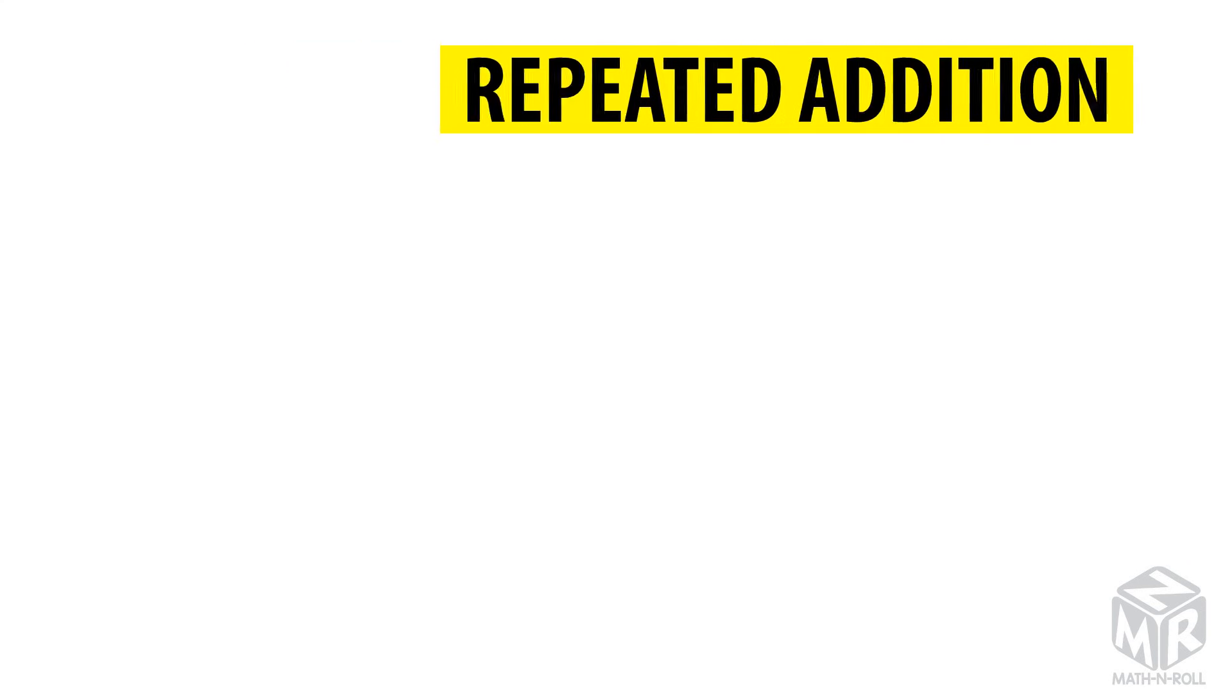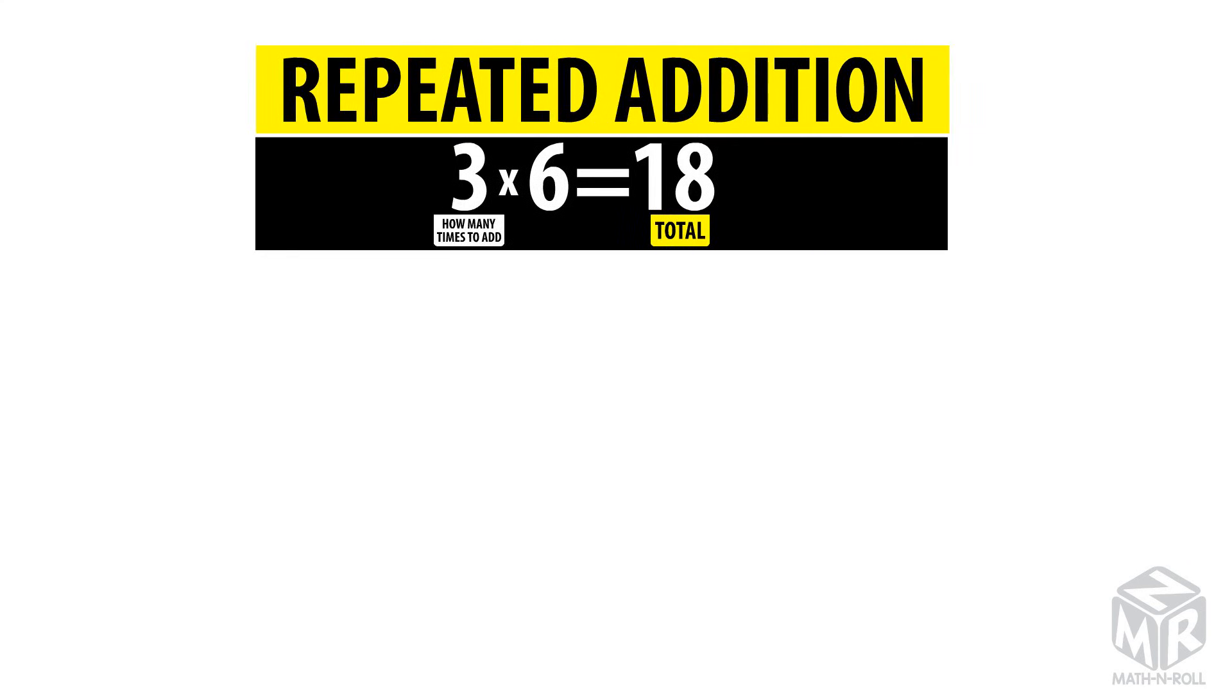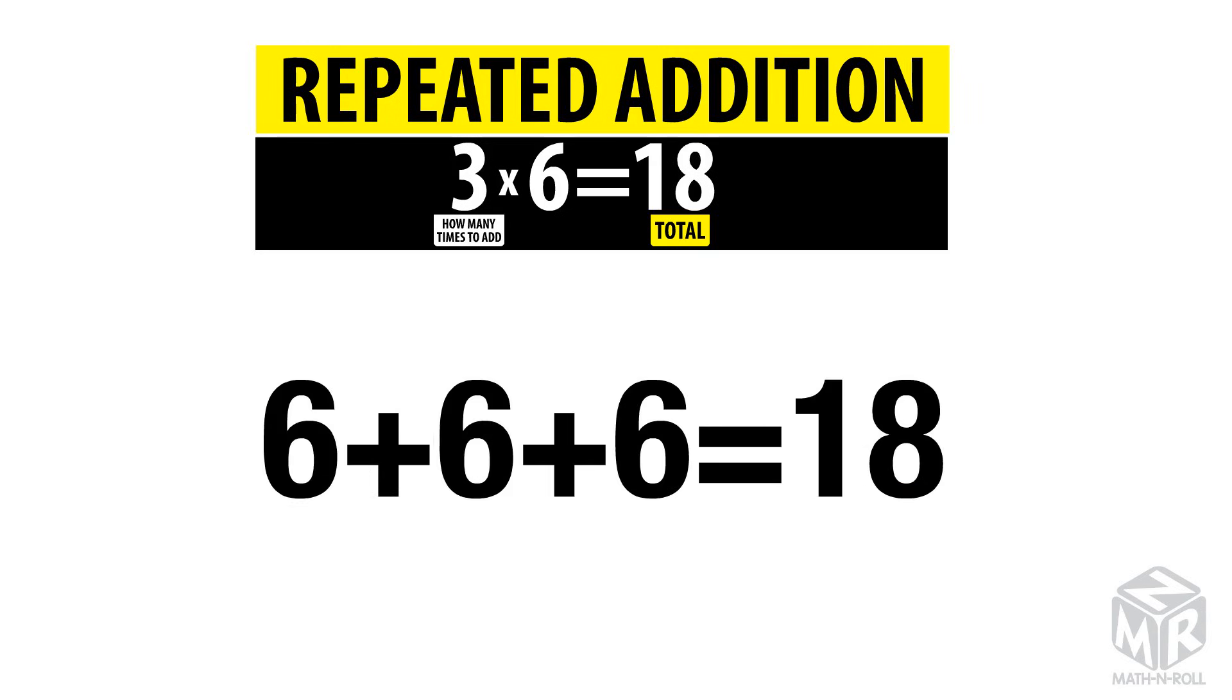The next strategy is repeated addition. To use repeated addition, you add the second factor repeatedly. The first factor tells us how many times we need to add. So we add six three times. We get 6 plus 6 plus 6 equals 18.